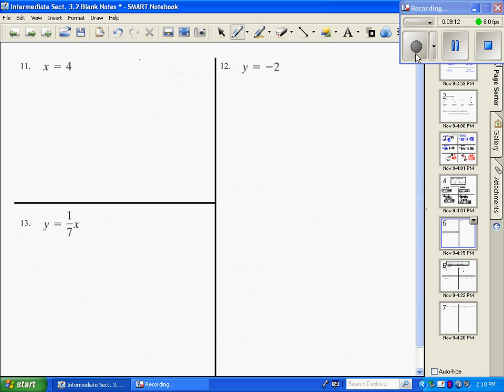Number 11, since this is our special case, we said x equals is always going to be a vertical line. My slope is, we said, undefined. And it has no y intercept.